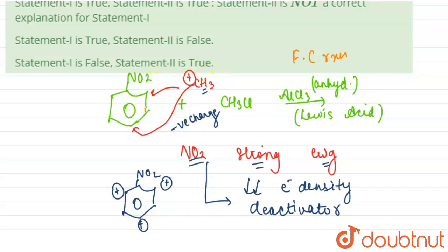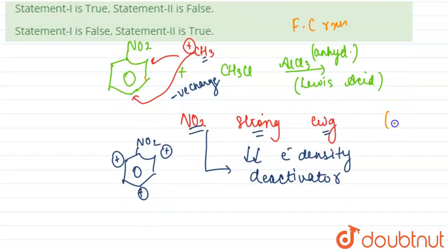And NO2 being a strong electron withdrawing group shows minus M minus I effect, decreases the electron density, hence it is a deactivator. So there will be no reaction here.